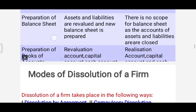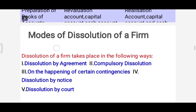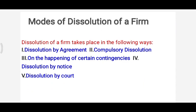Next we will discuss modes of dissolution of a firm — the various ways or methods by which a firm can be dissolved. The firm can be dissolved in the following ways: dissolution by agreement, compulsory dissolution, dissolution on happening of certain contingencies, dissolution by notice, or dissolution by court.